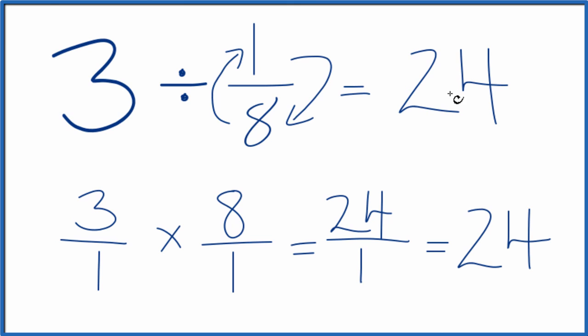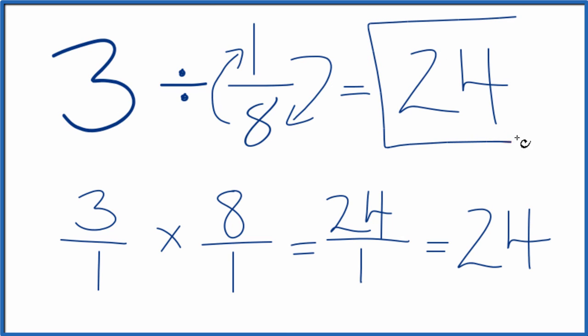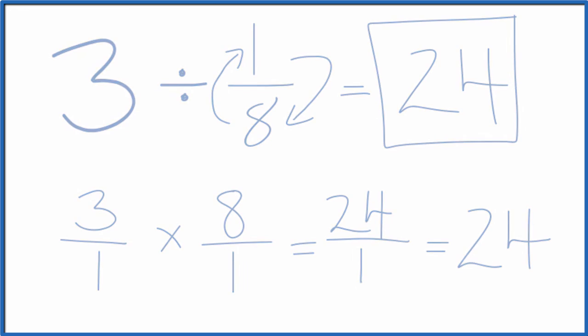If you were to take 24 and multiply it by 1/8, you'd get 3 — so we did this right. This is Dr. B, dividing 3 by 1/8. The answer is 24. Thanks for watching.